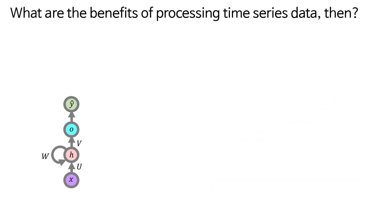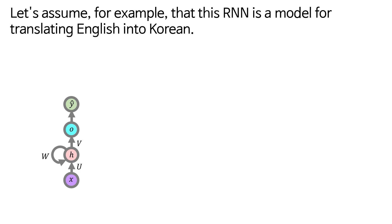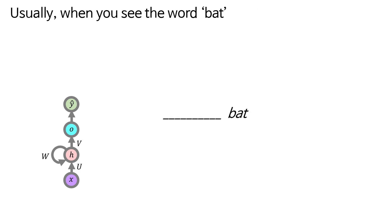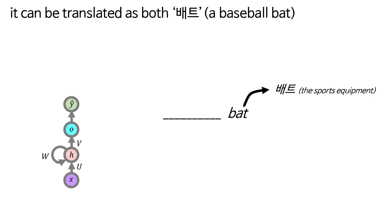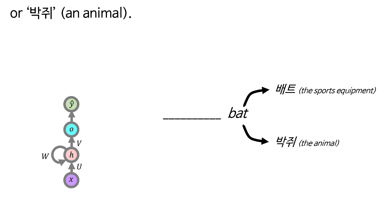What are the benefits of processing time series data, then? Let's assume, for example, that this RNN is a model for translating English into Korean. Usually, when you see the word bat, it can be translated as both bat, a baseball bat, or bakjwi, an animal.